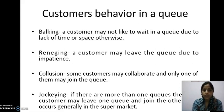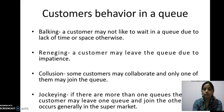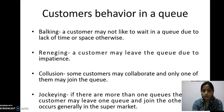The third one is jockeying. Jockeying means suppose there are more than one rows and a person is moving from one to another. If a person finds that another queue is moving faster, he or she immediately and swiftly moves to another one. This behavior is known as jockeying.